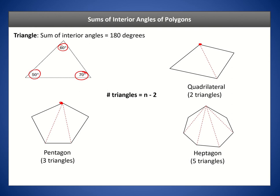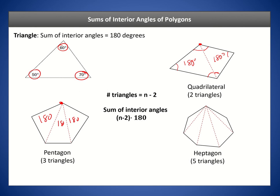To find the interior angles of a quadrilateral, we know each triangle adds up to 180. So for two triangles we add the interior angle sums together, giving a total of 360 degrees for the quadrilateral. Similarly, we can do this for the pentagon and add the interior angles for those triangles. The formula is: take the number of triangles and multiply by 180 degrees to get the sum of the interior angles.